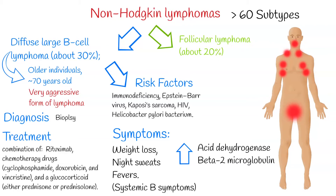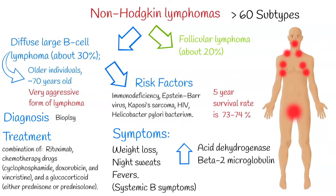Diffuse large B-cell lymphoma is a fast-growing cancer and it is fatal if left untreated. With treatment, the five-year survival rate is 73–74% in cases of localized or regionally disseminated disease. But if there is distant metastases, the five-year survival drops to 57%.